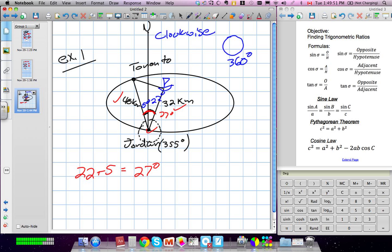We have a side, an angle, and a side. We know that angle in there is 27 degrees. Now in order to solve this, is this a right angle triangle? No. But because we don't know, we're going to use sine or cosine laws.